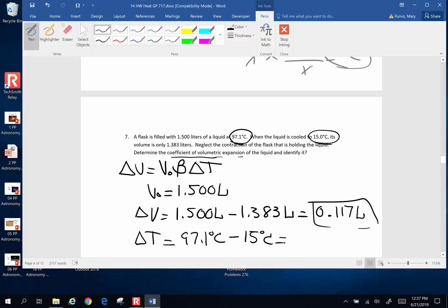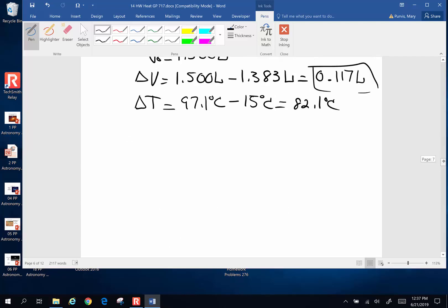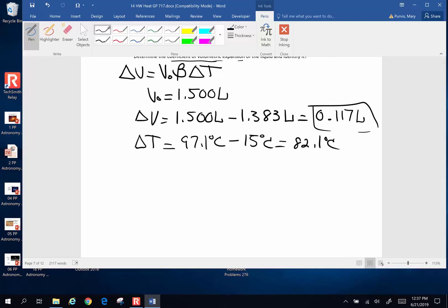So 97.1 degrees Celsius minus 15 degrees Celsius. I'm going to haul out a calculator. 82.1 degrees Celsius. And let's now set this up. So I'm solving for beta, the coefficient of volumetric expansion. Change in volume divided by original volume divided by change in temperature.